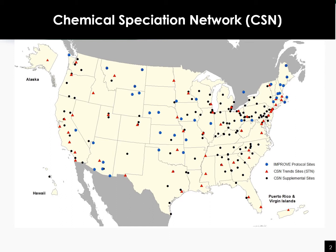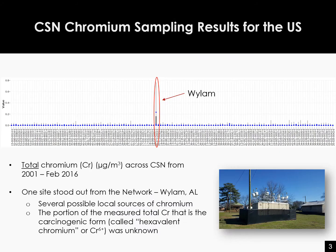One of these chemical speciation monitors is located at a monitoring station in the Wilhelm neighborhood south of downtown Birmingham, Alabama. This particular chemical speciation monitor measures the different types of metals that may be in the PM in the local air.